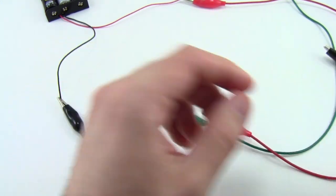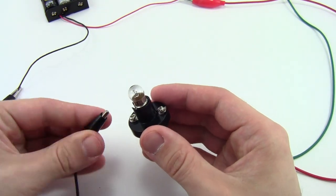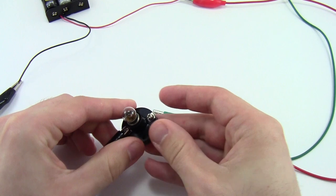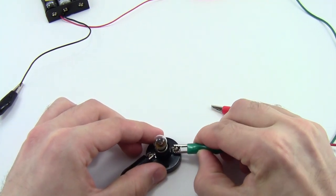So once you've loosened those a little bit, take the other end of the black alligator clip, connect it to one of the screws, and now take the green alligator clip, which you haven't used yet, and connect it to the other screw.